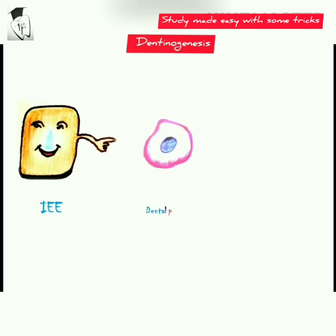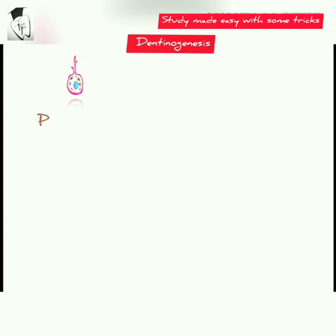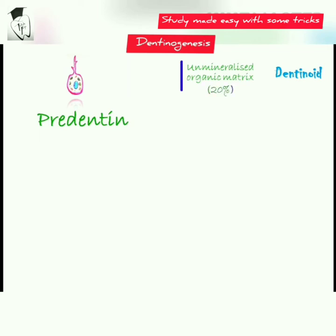The inner enamel epithelial cells induce the dental papilla cells to differentiate into odontoblasts. They lay an unmineralized organic matrix called dentinoid, consisting mainly of collagen — primarily type 1 collagen, with type 3 and type 4 in small amounts.